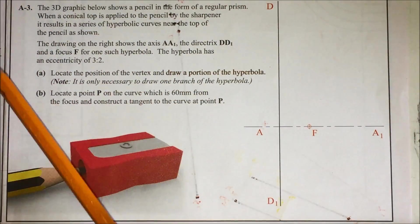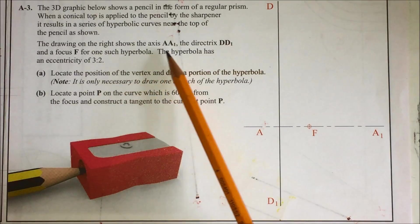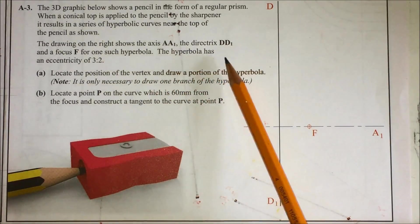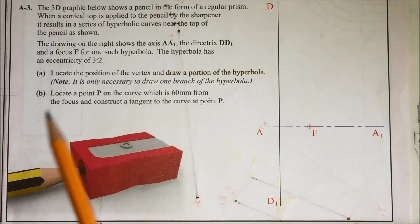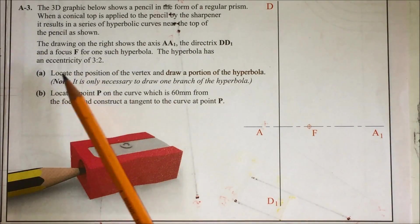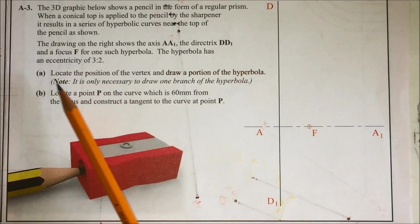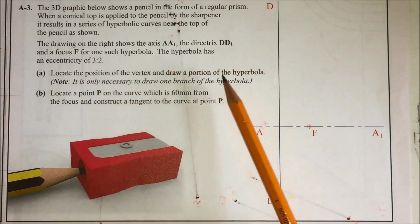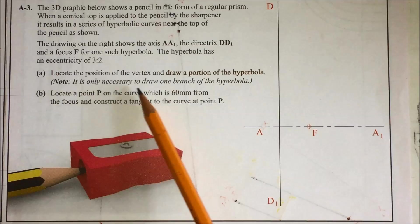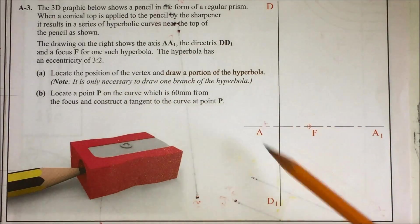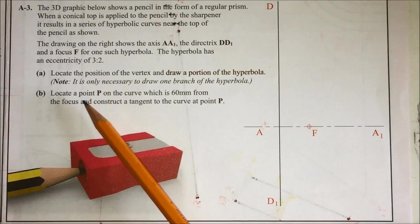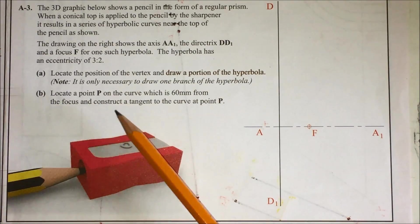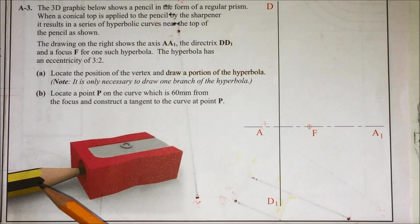The drawing on the right shows axis AA1, directrix DD1, and a focus on one such hyperbola. The hyperbola has an eccentricity of 3 to 2. Part A: locate the position of the vertex and draw a portion of the hyperbola. Note it is only necessary to draw one branch, so you don't have to do the base one. Part B: do a tangent at point P which is 60mm from the focus.